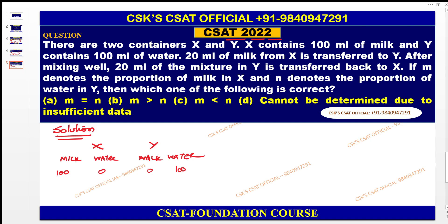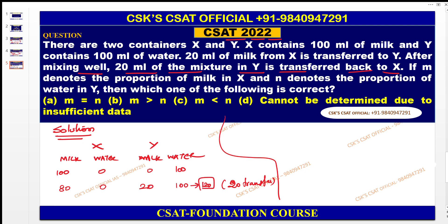20 ml of milk from X is transferred to Y. So X: milk becomes 80, water remains 0. Y: milk becomes 20, water remains 100 — total 120 ml. After mixing well, 20 ml of the mixture in Y is transferred back to X. The whole Y is now mixed — total is 120. So we are transferring 20 ml out of 120.